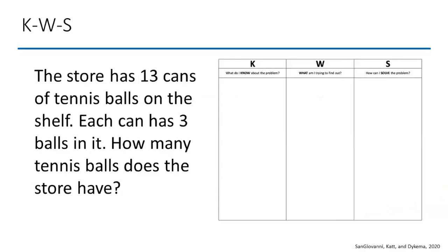Here's another problem-solving routine called KWS — you're probably familiar with KWL. In KWS, students routinely write down: what do they Know about the problem, what are they trying to find out (Want), and how might they Solve it. Take the problem: 'The store has 13 cans of tennis balls. Each can has 3 balls. How many tennis balls does the store have?' As adults we've been trained to pull out the math — but we had to untrain some of our teachers and avoid over-training kids to do the same.